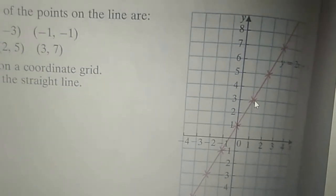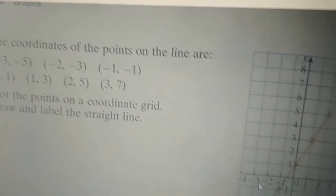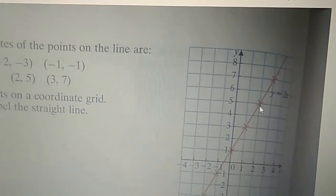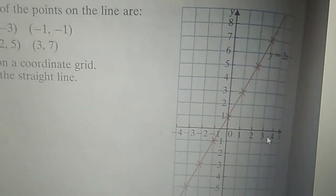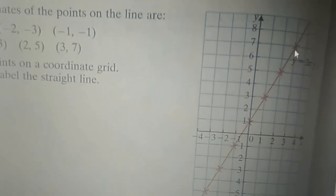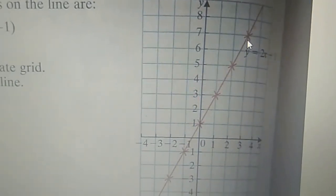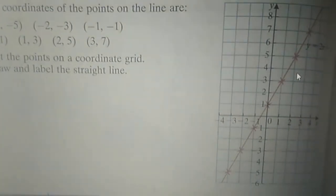Then we have 2, 5: 2 on the x-axis and 5 on the y-axis — they have put a cross mark. Then we have 3, 7: 3 on the x-axis and 7 on the y-axis — they have put a cross mark. That is all for today. This was all about graphs and coordinates; see you in the next class.